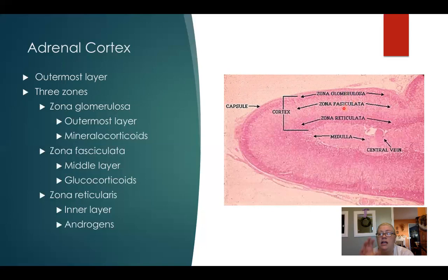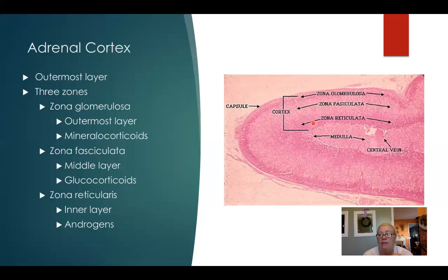The zona fasciculata is the middle layer and produces glucocorticoids — in humans, that's cortisol. Then there's a thin layer of reticular or linear cells called the zona reticularis, the innermost layer of the cortex that butts right up against the medulla. This is where the androgens are produced — the estrogen and the testosterone.